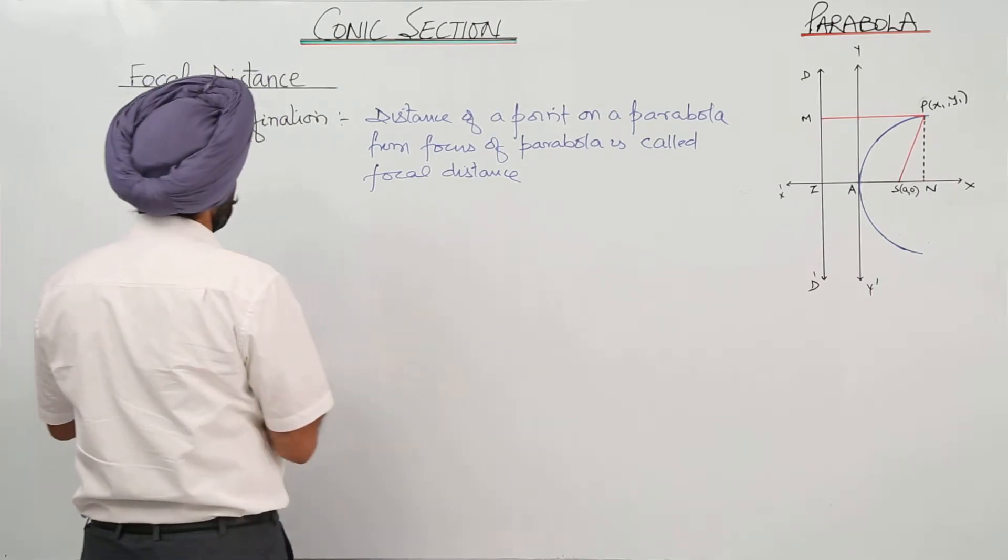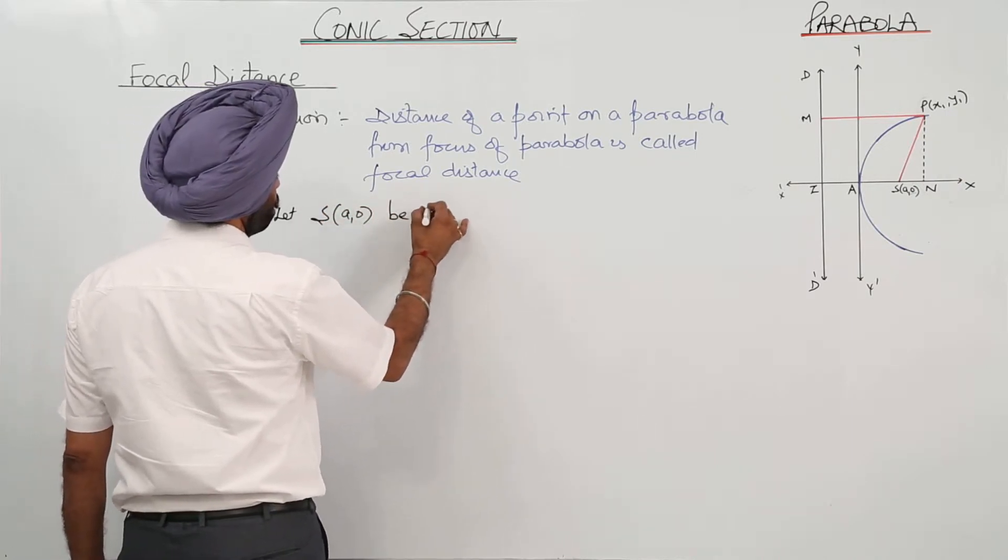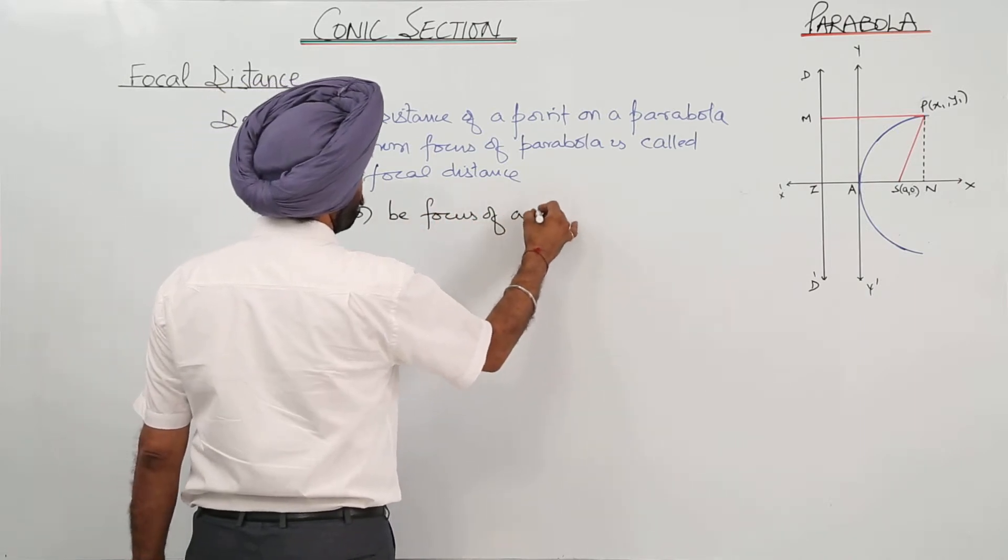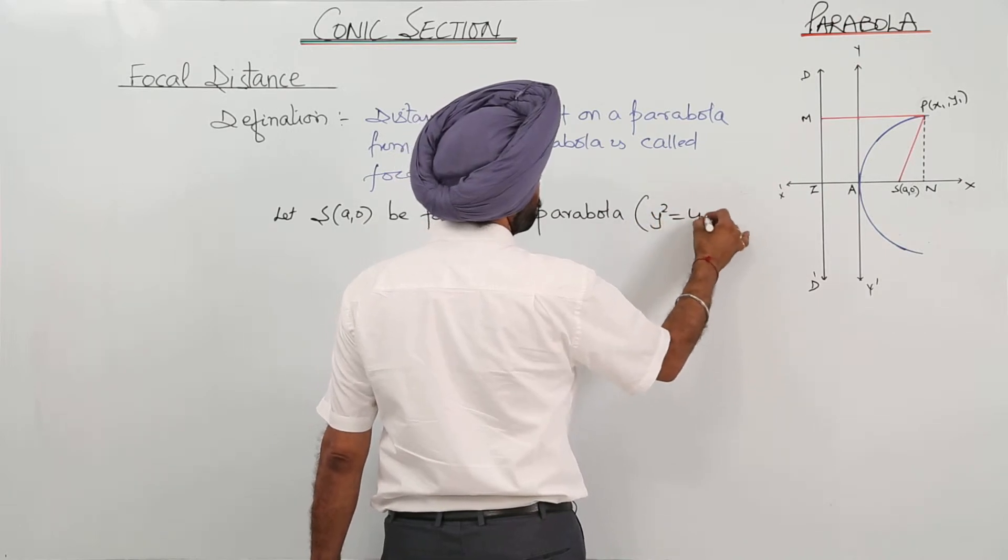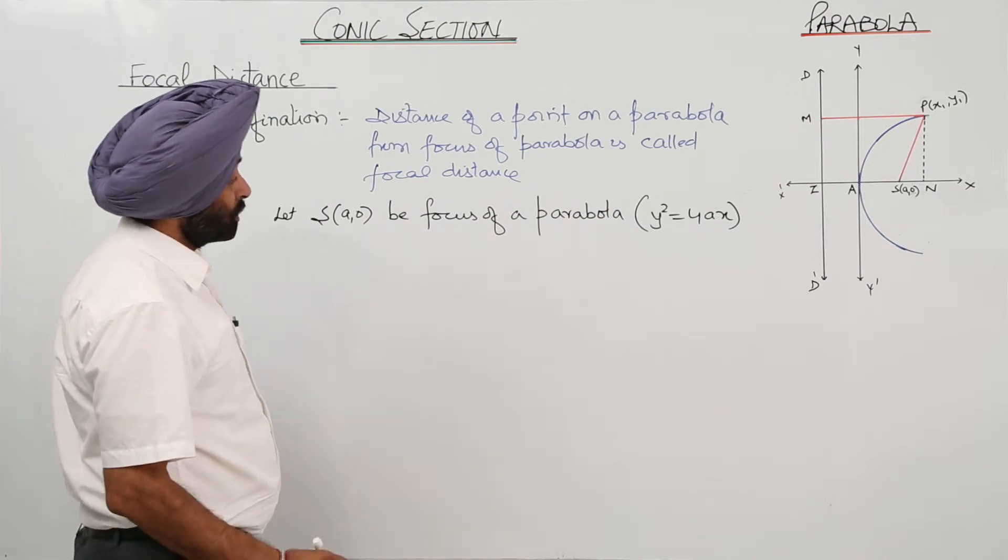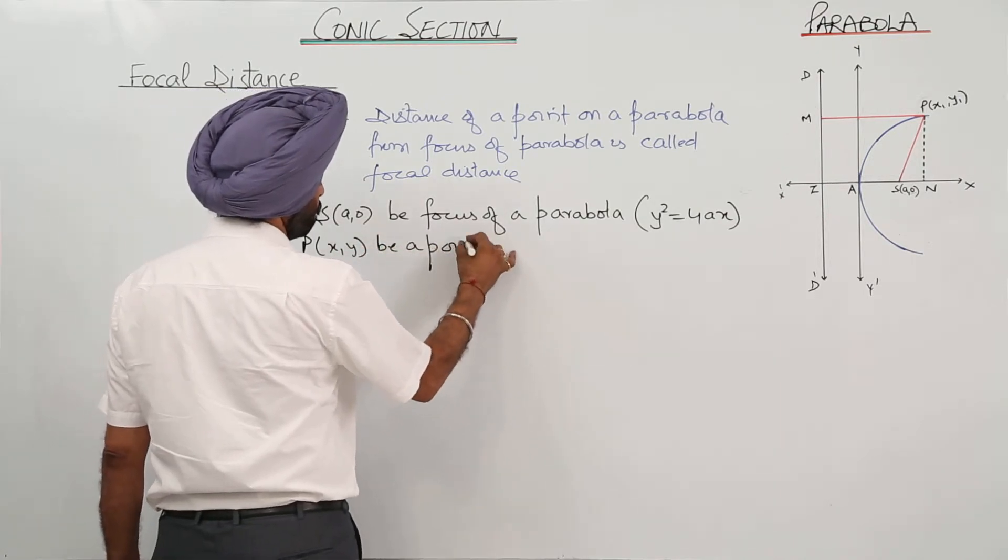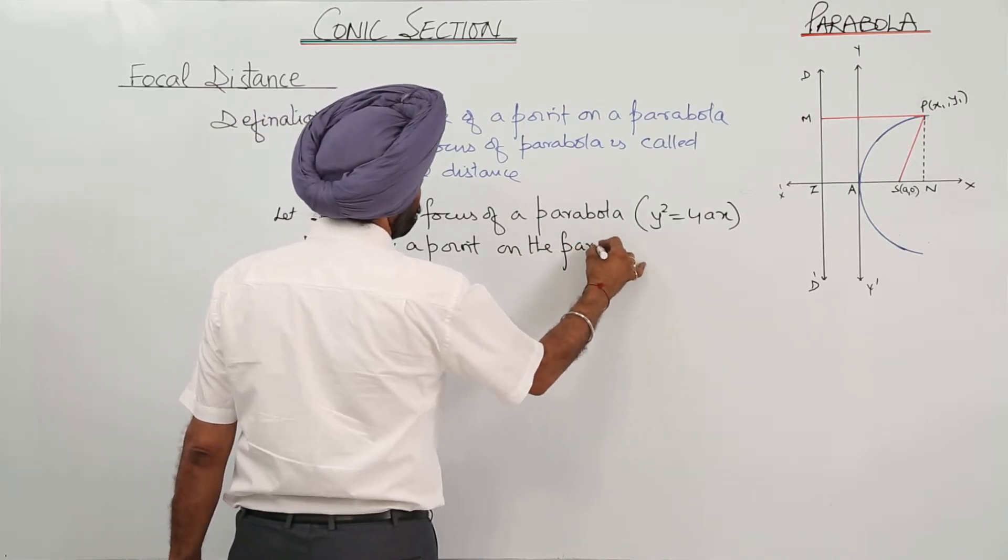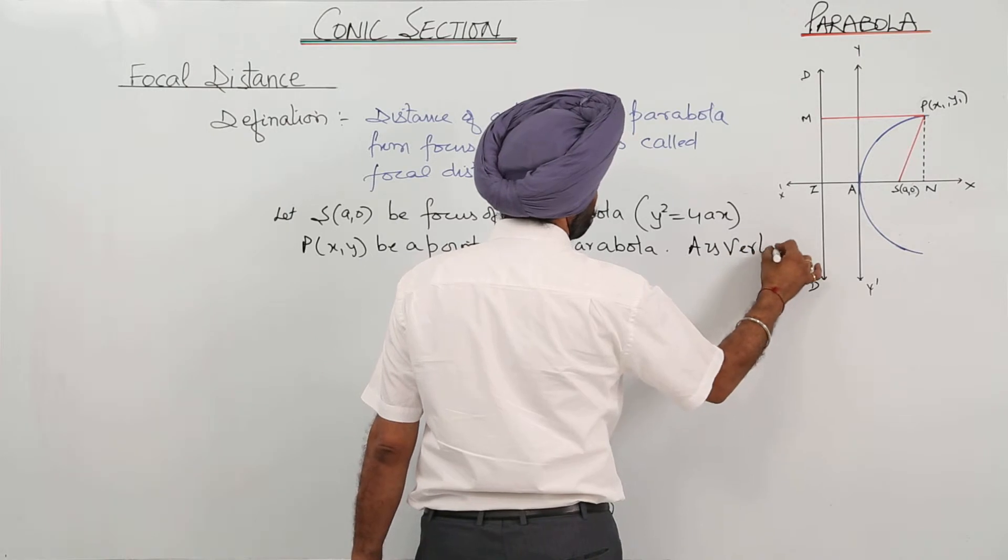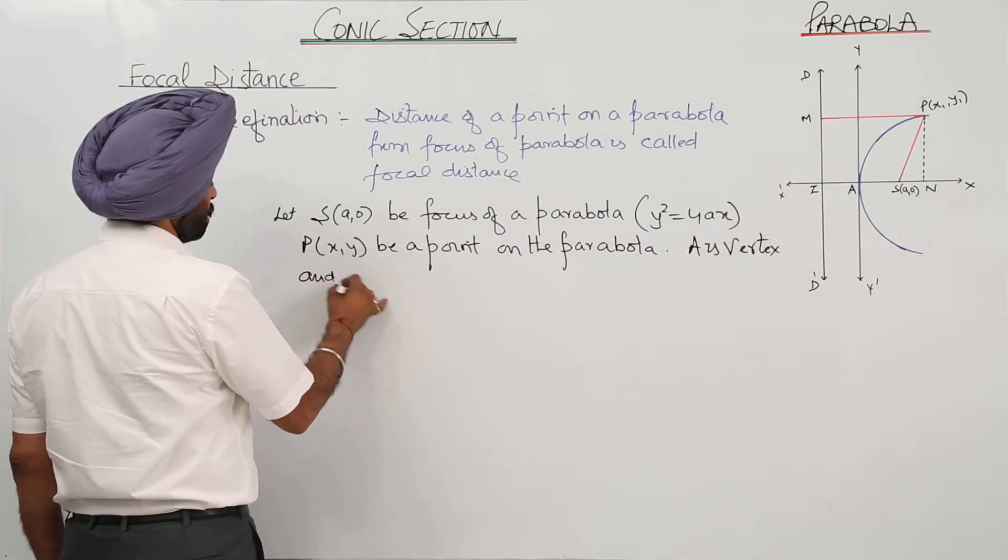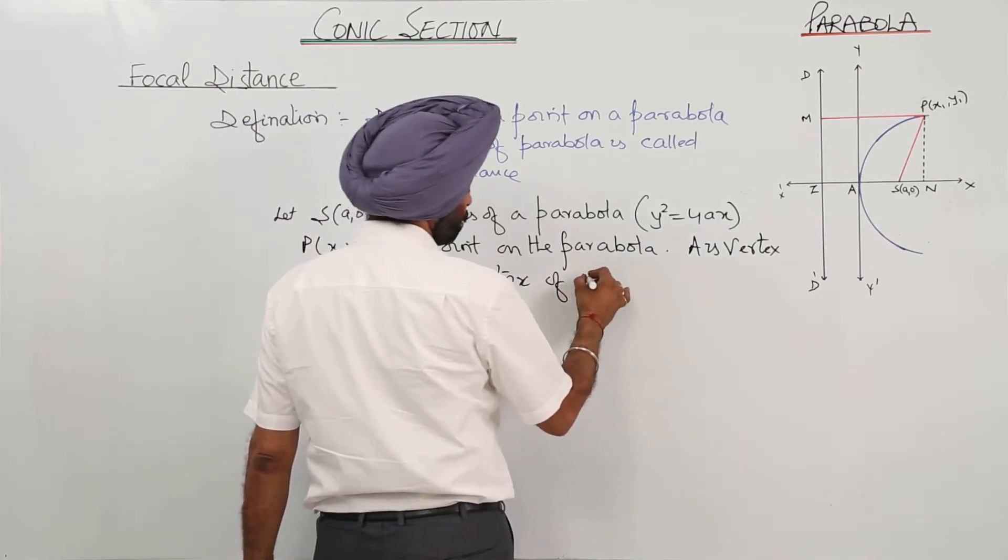Is it clear? Now let S(a,0) be focus of a parabola, and the equation of the parabola is y square equals 4ax. Let P(x,y) be a point on the parabola. A is vertex, and DD' is directrix of parabola.